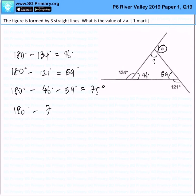180 minus 75, giving me 105 degrees. So a will be 105 degrees. That is the answer for this question.